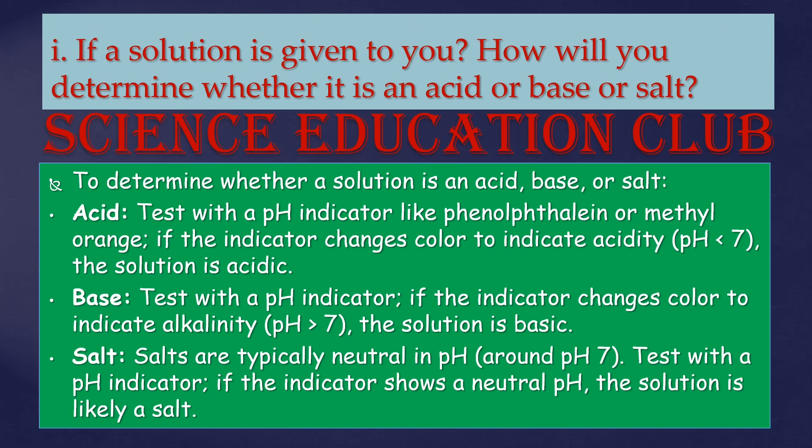If a solution is given to you, how will you determine whether it is an acid, base, or salt? To determine this: for acid — test with a pH indicator like phenolphthalein or methyl orange; if the indicator changes color to indicate acidity, the solution is acidic. For base — if the indicator changes color to indicate alkalinity, the solution is basic. For salt — salts are typically neutral in pH; if the indicator shows a neutral pH, the solution is likely a salt.